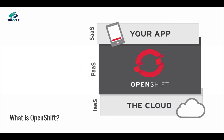For example, OpenShift will create an environment, install Ruby, push code and add MySQL, and will automate scaling — so as a developer you don't need to worry about the platform, as it's taken care of by OpenShift.